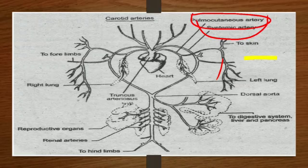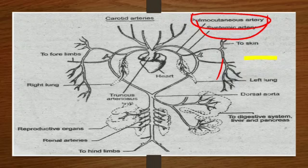Under the pulmocutaneous artery, the systemic arteries form a heart-shaped major aorta, which goes to each and every system — the fore and hind limbs, the renal artery, and reproductive organs. The dorsal aorta carries oxygenated blood towards the digestive system.